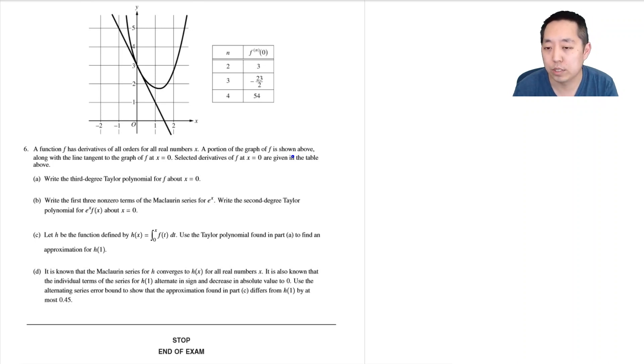A function f has derivatives of all orders for real numbers x. A portion of the graph of f is shown above along with the line tangent to the graph of f at x equals zero. Selected derivatives of f at x equals zero are given in the table above. Part A: Write a third degree Taylor polynomial for f about x.